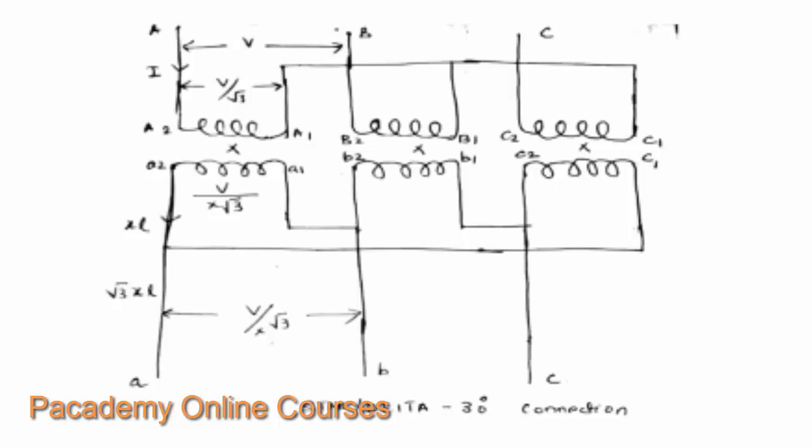the line-to-line voltage at the star end will be V, but the voltage between the phase or the windings, individual windings, will be V by root three. And there is a reduction in the voltage by a margin of root three, which will reduce the insulation cost of the windings.